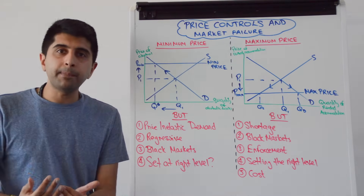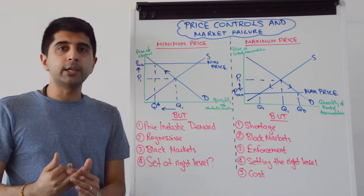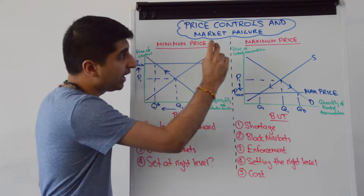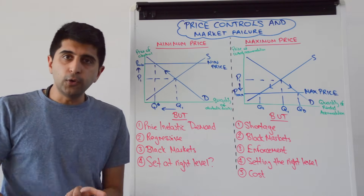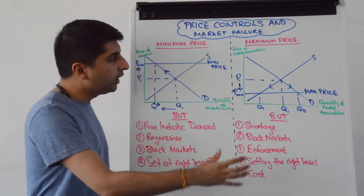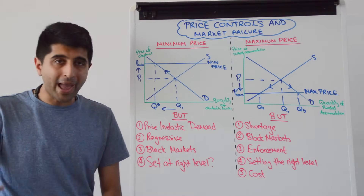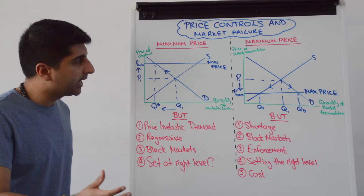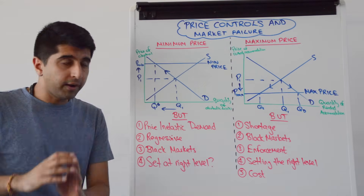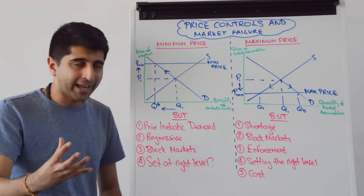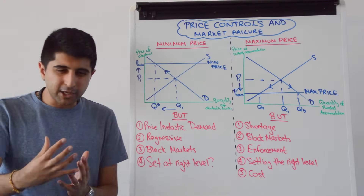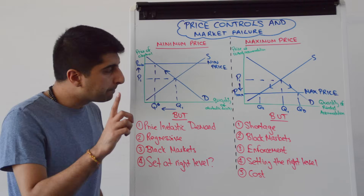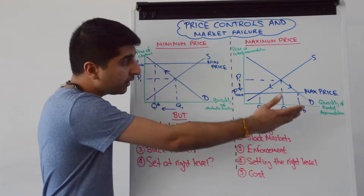Now let's talk about maximum prices. Price ceilings are used in markets where the price is deemed too high by the government. By imposing a price ceiling below equilibrium, we are promoting equity and encouraging more consumption of essential goods or services — like rented accommodation in cities like New York and Berlin, the most common examples of rent control. The idea is to encourage consumption and promote equity so people can access accommodation they need.